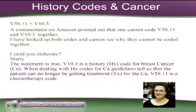I like this because this is something that it seems like every student asks about, so I've explained it so many times I feel like I've got it memorized. Someone had asked via the last session about V58.11 or V10.3. They'd seen a commentator on Amazon point out that one cannot code these two codes together, and then they had looked up both codes and can't see why they cannot be coded together.